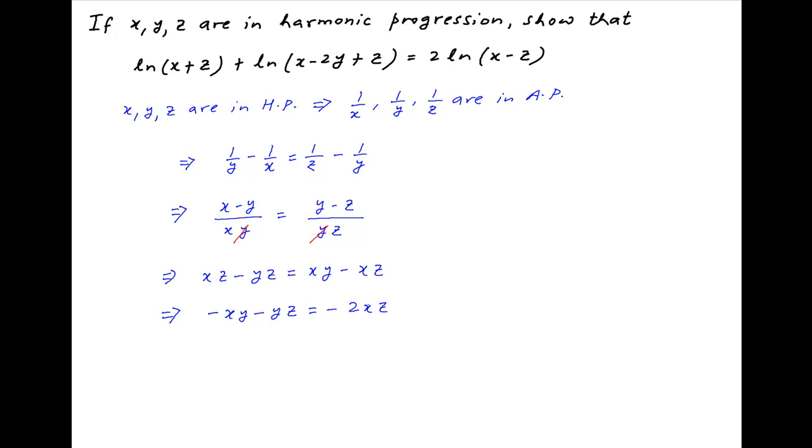Now multiply both sides by 2. We get -2xy - 2yz = -4xz.